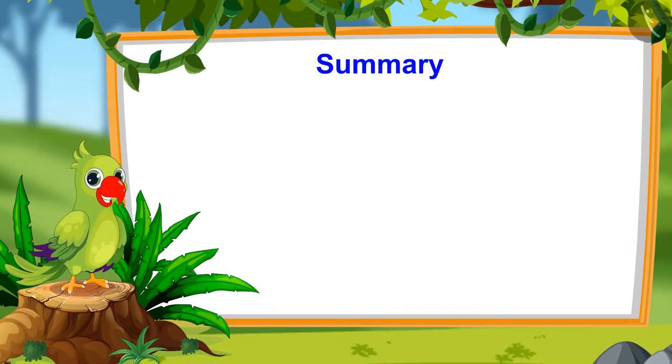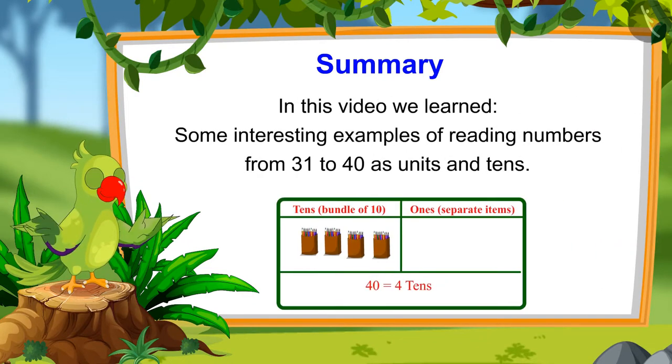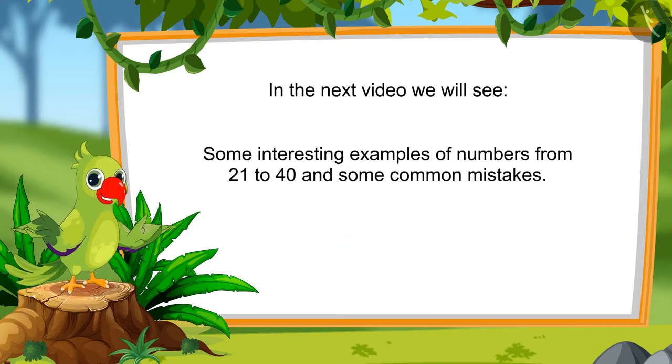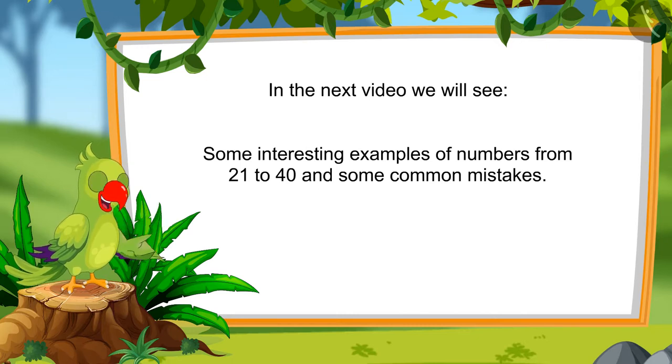So, children, that was all for today. In this video, we saw numbers from 21 to 40 and some interesting examples of reading those numbers as units and tens. In the next video, we will see some interesting examples of numbers from 21 to 40 and learn about some common mistakes which should not be done. Till then, goodbye friends.